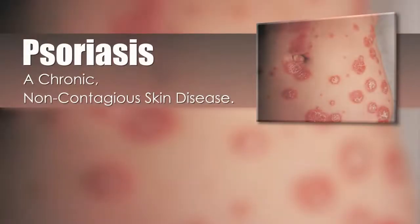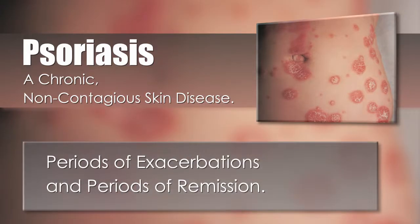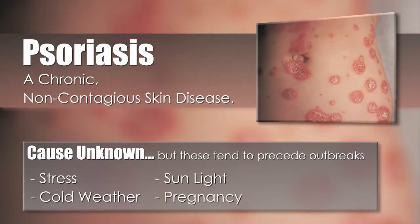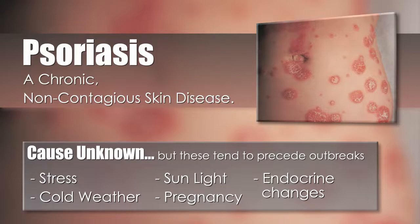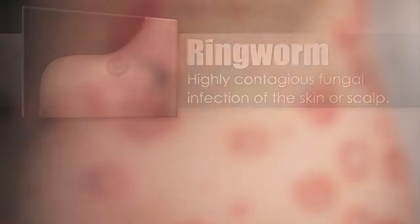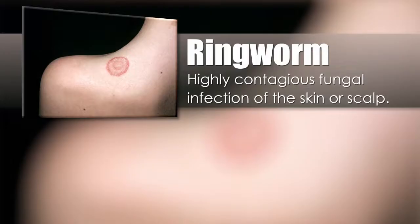Psoriasis is a chronic, non-contagious skin disease with periods of exacerbations and periods of remission. The cause is unknown, but stress, cold weather, sunlight, pregnancy, and endocrine changes tend to precede outbreaks.